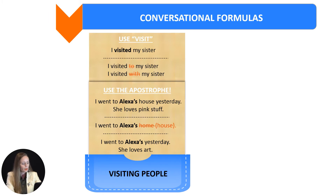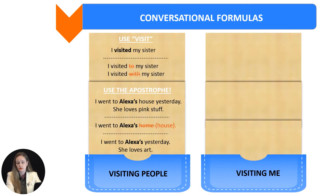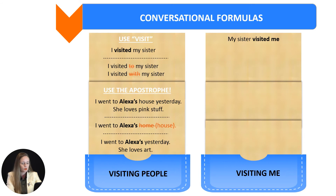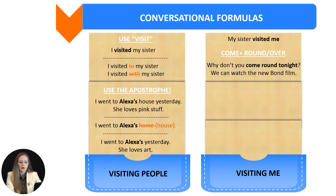Now let's move to situations when someone is visiting me. How do I say that? We use the same verb visit: my sister visited me. But there is an extra phrase to use — come round or come over — which simply means come to my house. For example: why don't you come round tonight? We can watch the new Bond film. It means come to my house.